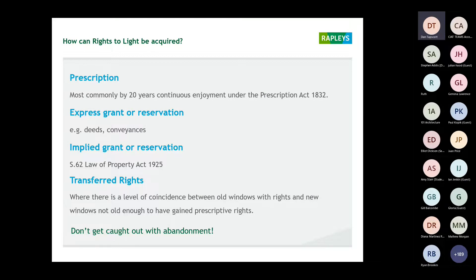How can these rights be granted to buildings? By far the most common is the Prescription Act from 1832 — 20 years of continuous enjoyment of light through a defined aperture. However, I would regard the critical number as 19 years and one day, because there is a way to block it via a light obstruction notice, but that process takes a year. So at 19 years and one day you haven't got a year left to run. Buildings in London near Bank with lots of glazing are now coming up to 20 years — definitely something to be aware of.